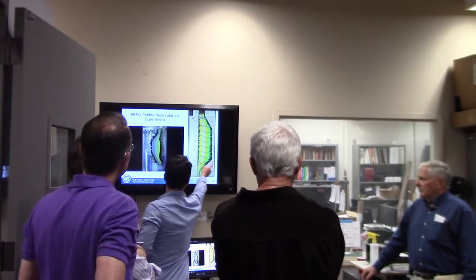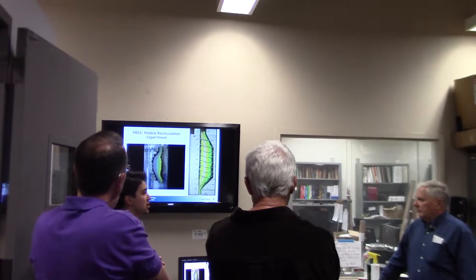This is the central column, and this would be rotated around. It's an annulus, a donut-shaped core.